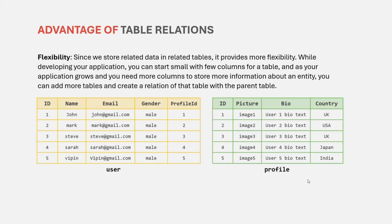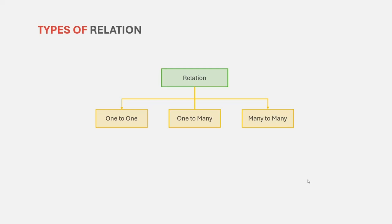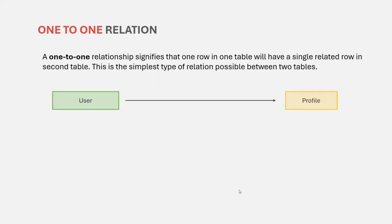Now let's talk about different types of relations which we can have between two tables. Between two tables, we can have a one-to-one relation, a one-to-many relation, and a many-to-many relation. In a one-to-one relationship, we have one row in one table which will have a single related row in the second table. For example, there is a one-to-one relationship between user and profile. For a user row in the user table, there will be one and only one row in the profile table — one user cannot have multiple profiles.